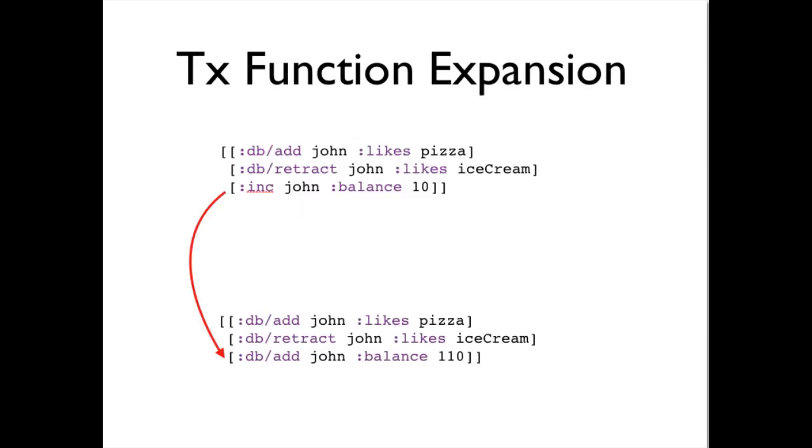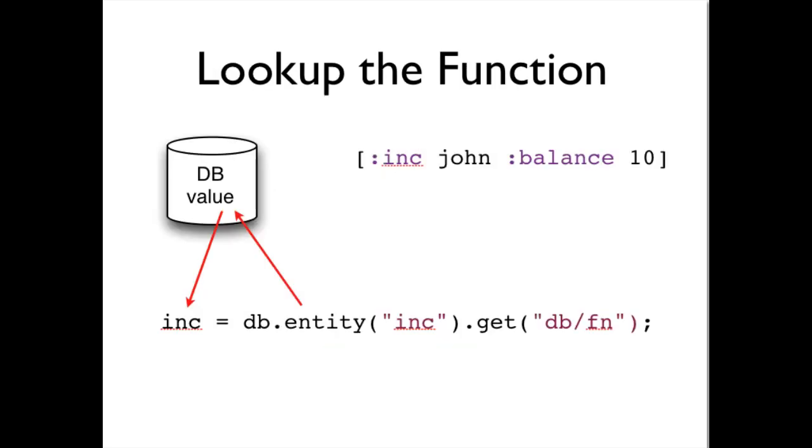The way this works is through expansion. When data reaches the transactor, each item is expanded before being added to the database. The expansion for assertion or retraction is simple. They go through unchanged. The expansion for other operations is defined by functions. Here we see inc john balance 10 expanding to a single assertion that john's balance is now 110.